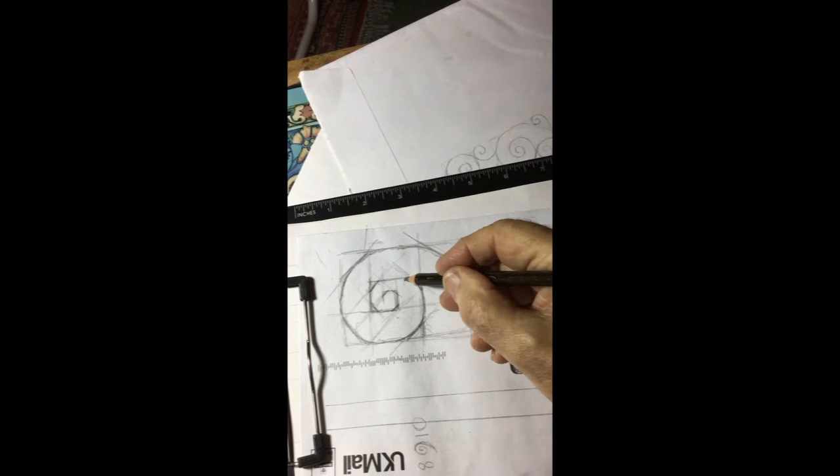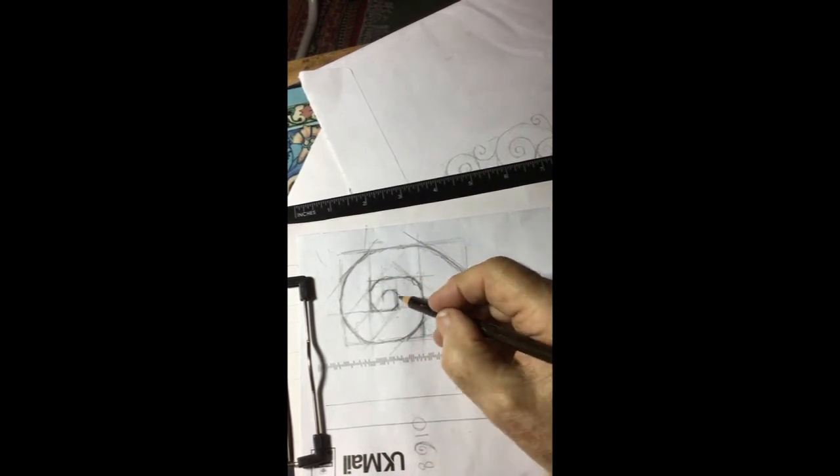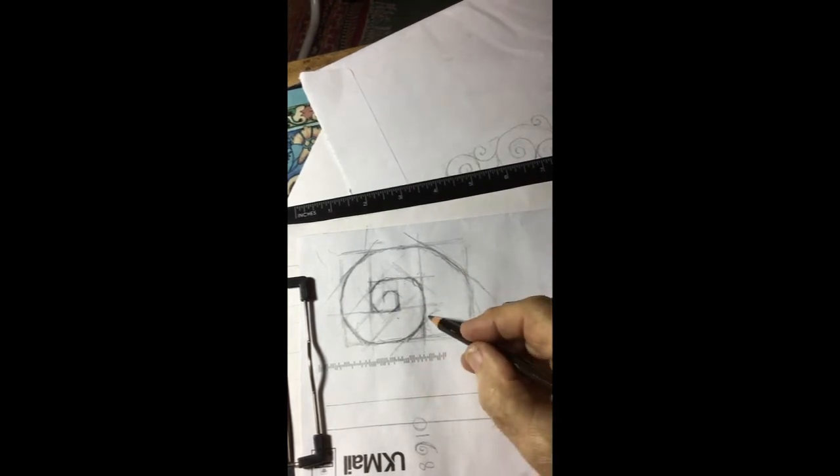So now we have this movement here, so we've got our spiral of the scroll. There you go.